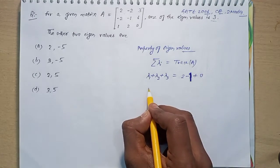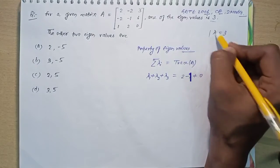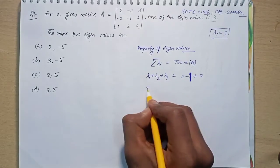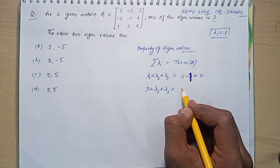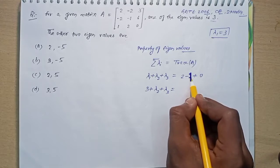that is lambda one equals three. So it will be three plus lambda two plus lambda three equal to two minus one, that is one.